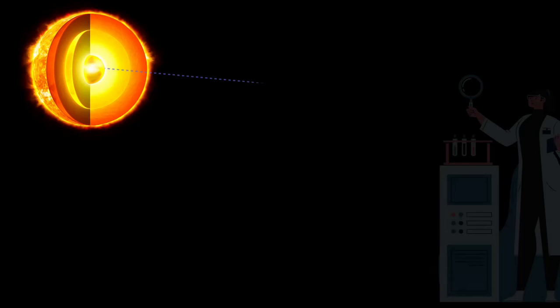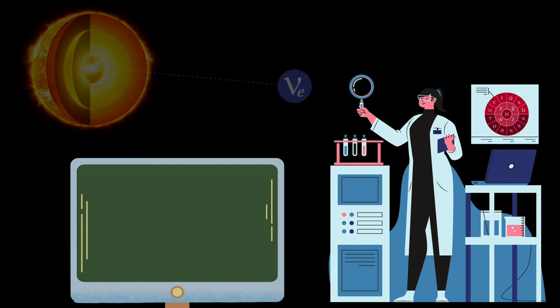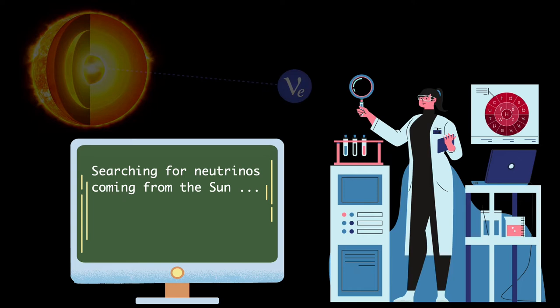Since the 1960s, scientists had theoretically calculated the number of neutrinos that were created in the nuclear reactions that make the sun shine. But when carrying out the measurements on Earth, up to two-thirds of the calculated amount was missing. Where did the neutrinos go?